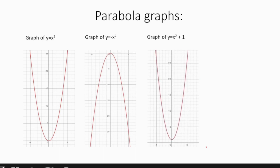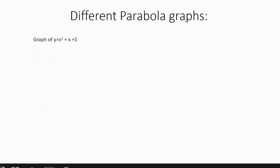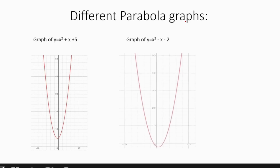Now let's check some more parabolic graphs. As you can see here, the y-intercept has moved one up. This is because when x is equal to zero, y is equal to one. Same thing applies with minus. Alright, let's check some more complex parabolic graphs — as you can see here are two of them.